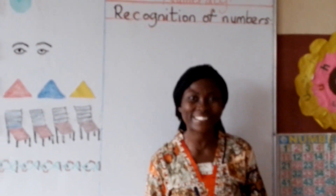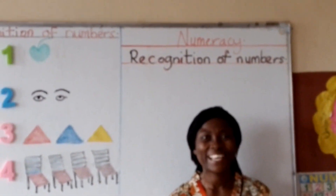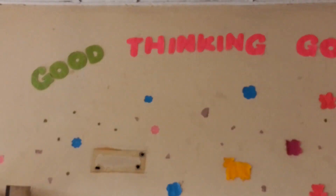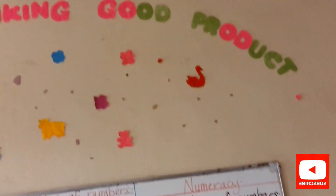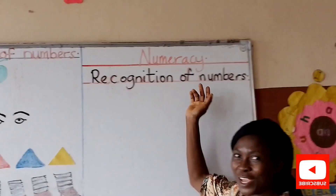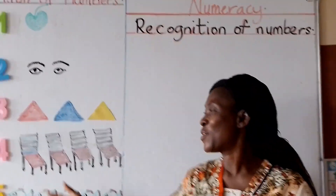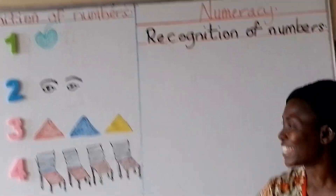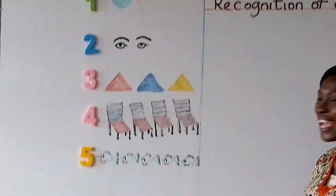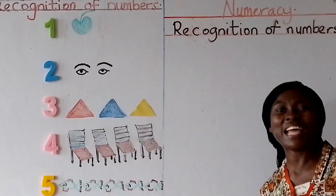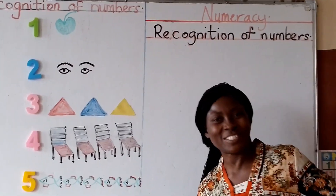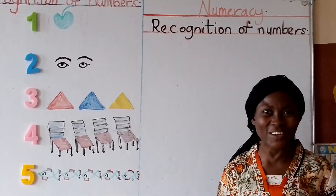Hello viewers, today we are learning recognition of numbers. 1, 2, 3, 4, 5, 6 — that are the numbers go. 7, 8, 9 — turning number 12 is what you need to know.